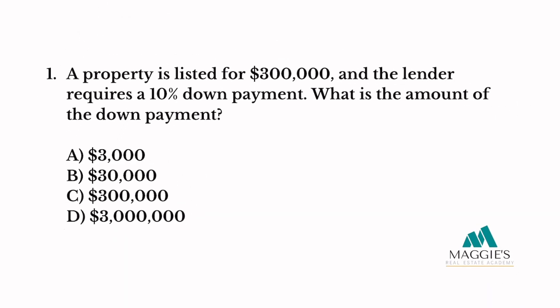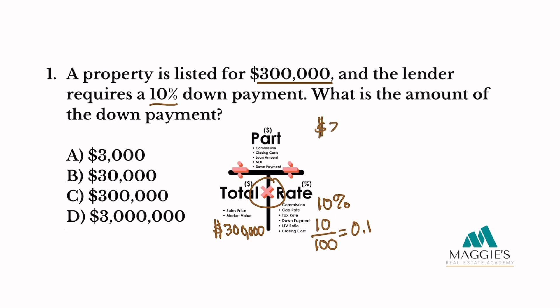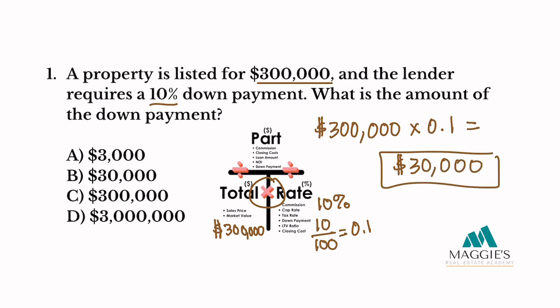Number one. A property is listed for $300,000 and the lender requires a 10% down payment. What is the amount of the down payment? Using the T-Method, the $300,000 list price goes in the total column and the 10% down payment goes in the right column. Remember to convert your percent to a decimal by dividing by 100: 10 divided by 100 equals 0.1. According to the T-chart, all we have to do is multiply: $300,000 times 0.1 equals $30,000. So my answer to this one is B.